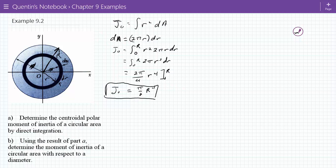Now part B, we're supposed to use that answer and determine the moment of inertia of the circle with respect to a diameter. Well, what is that saying? It's saying with respect to this axis right here, or this axis. It's symmetric, so it's going to be the same whichever way we do it.